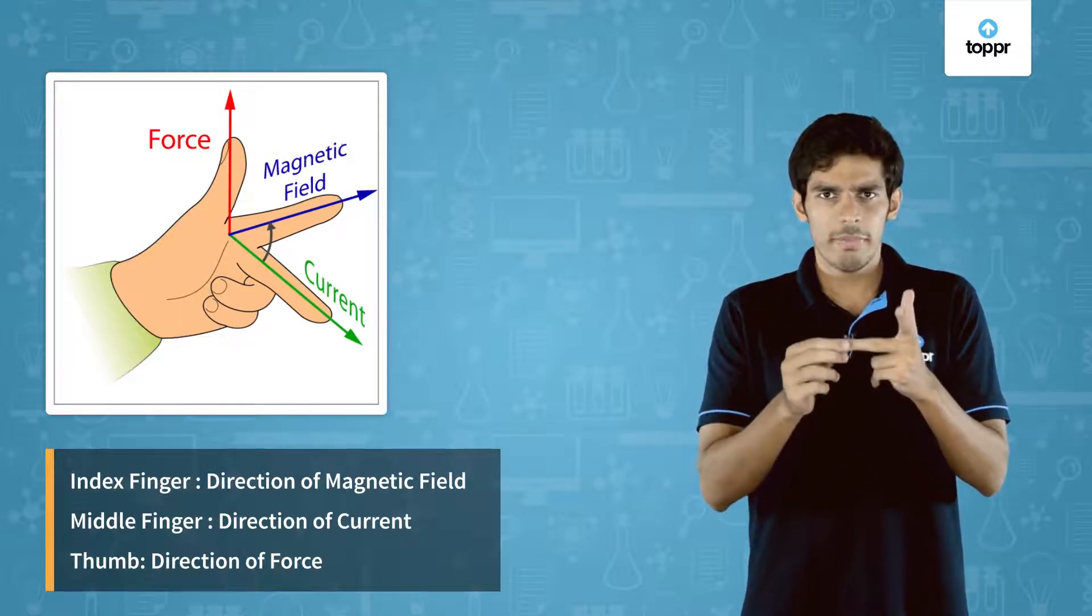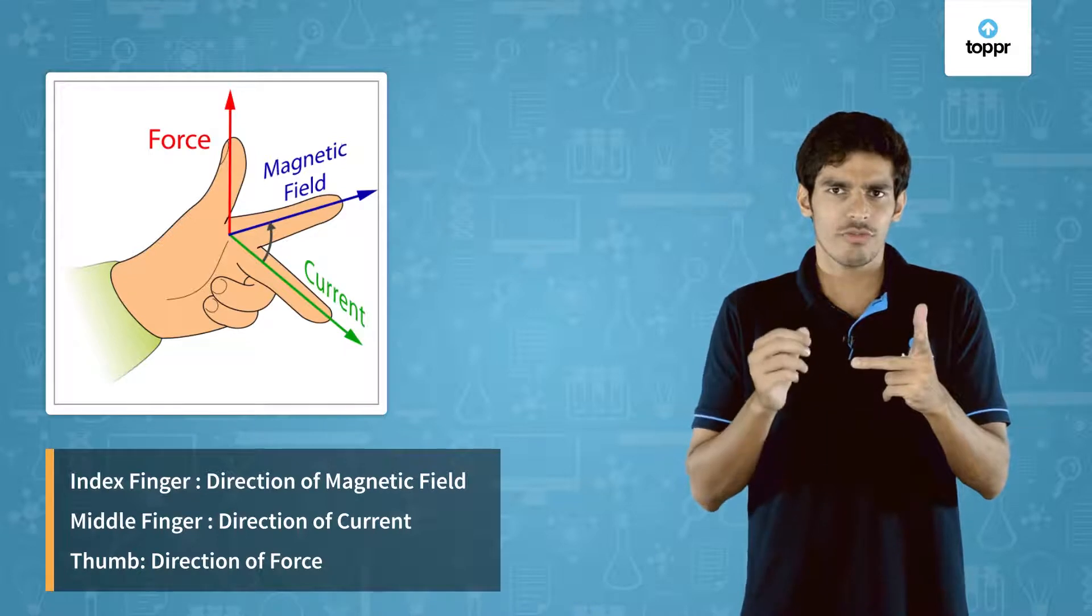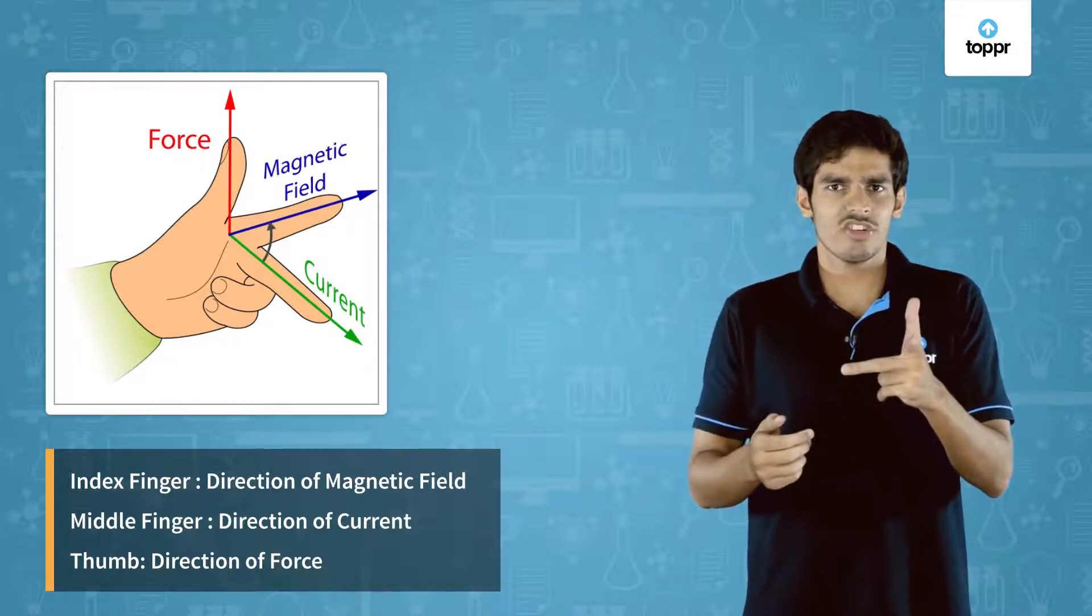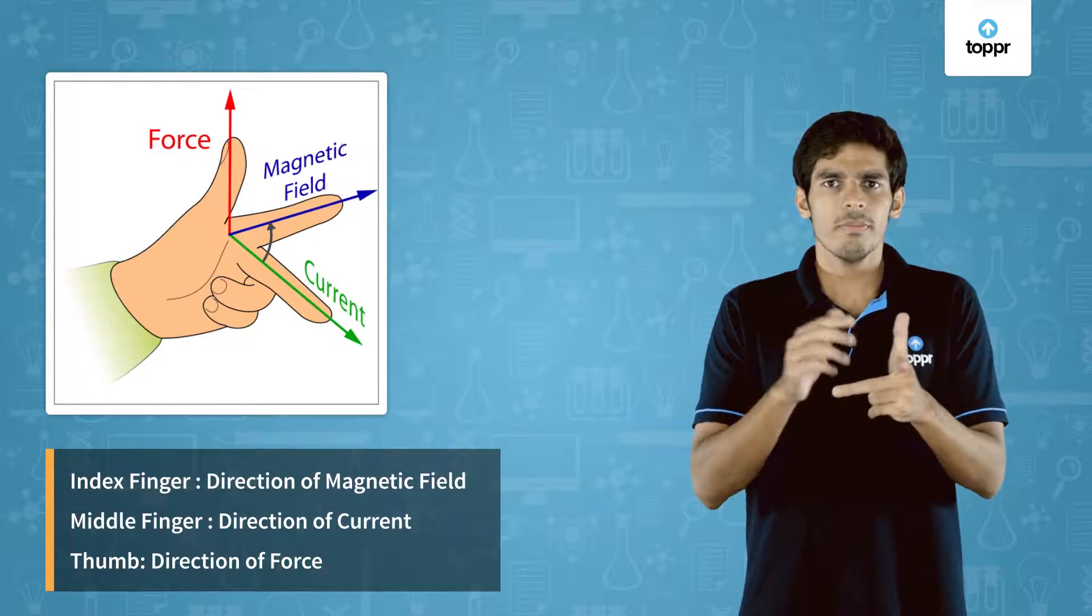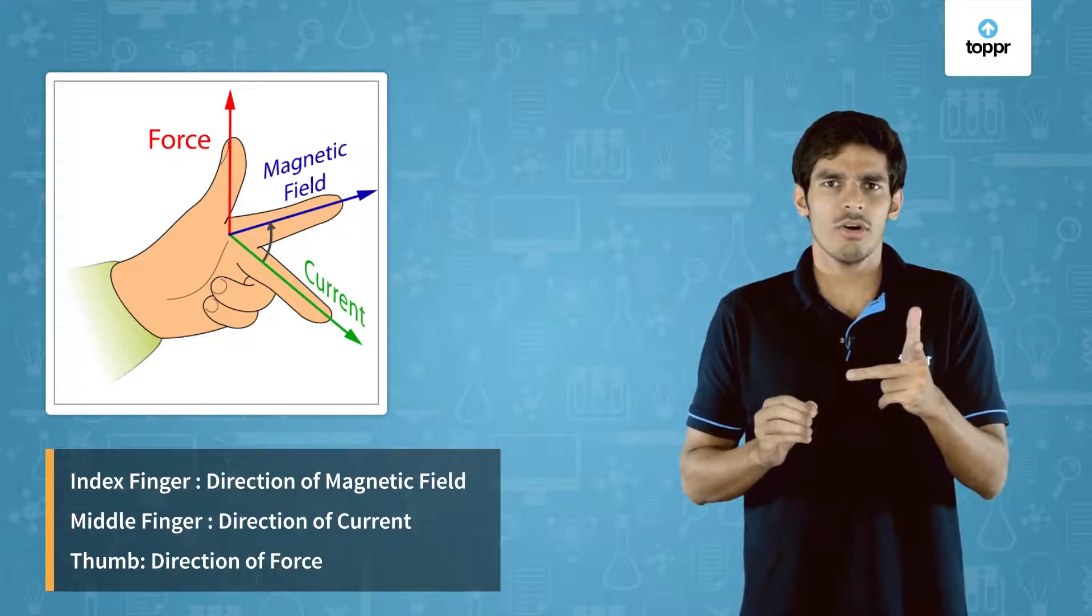In this, the middle finger represents the direction of current, the index finger represents the direction of magnetic field, and thumb points in the direction of force acting on the conductor.